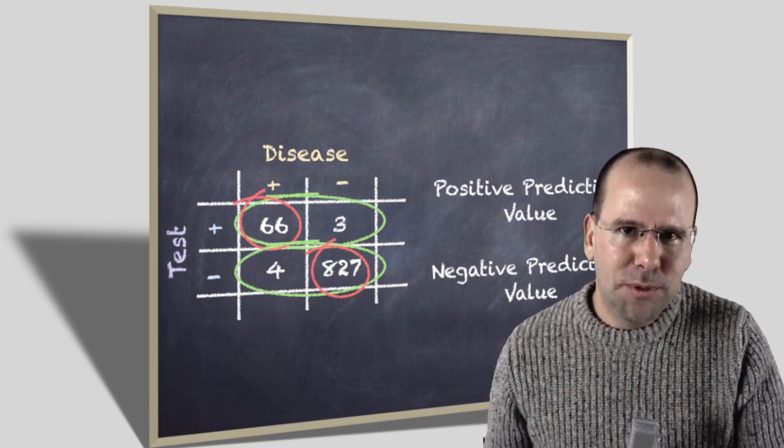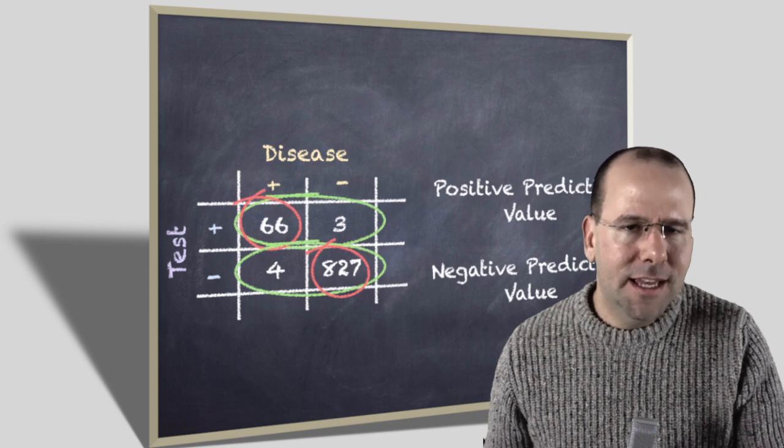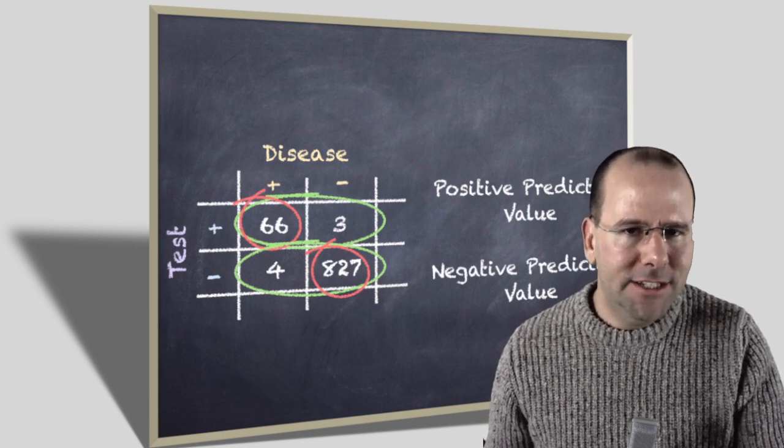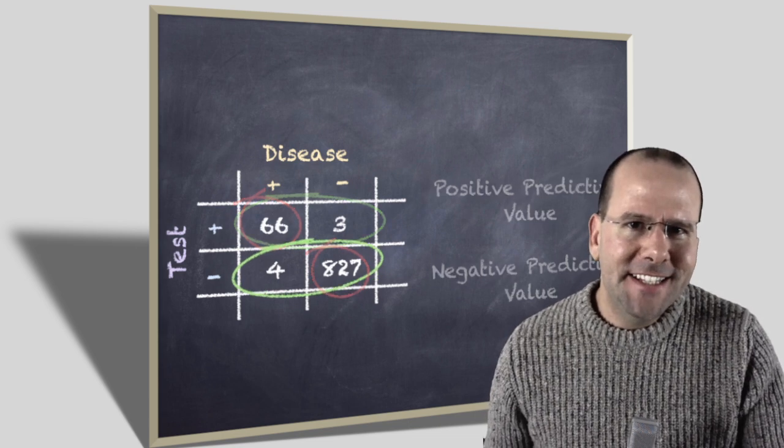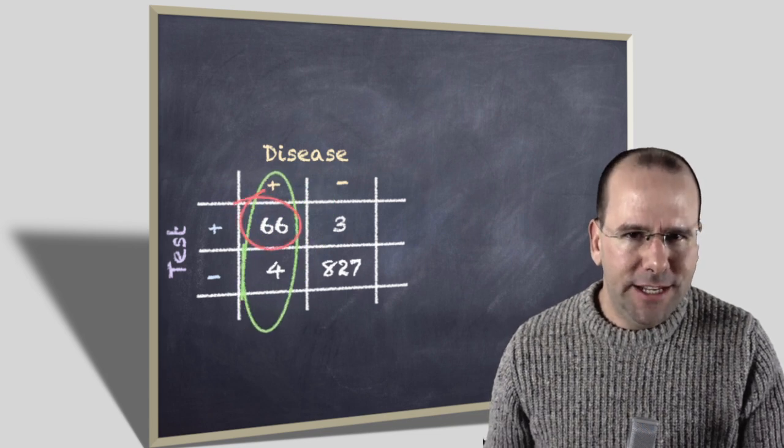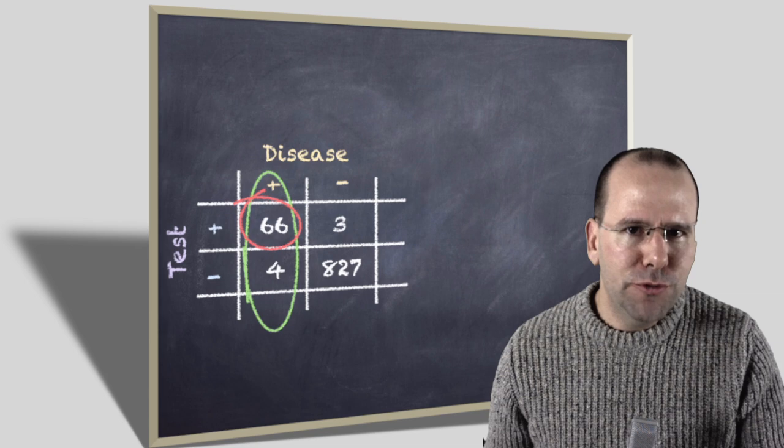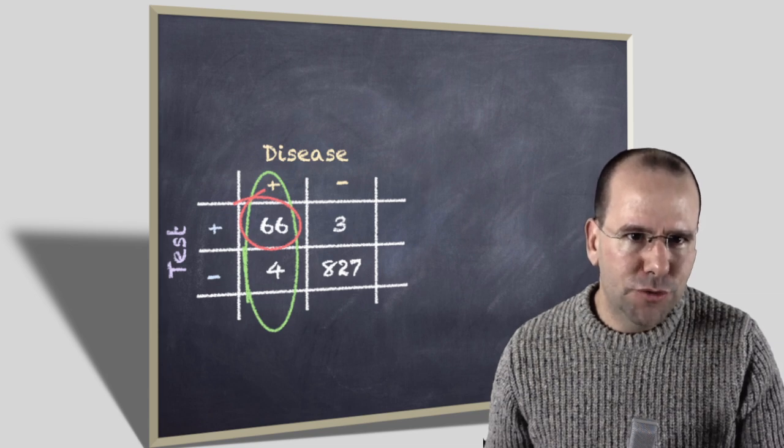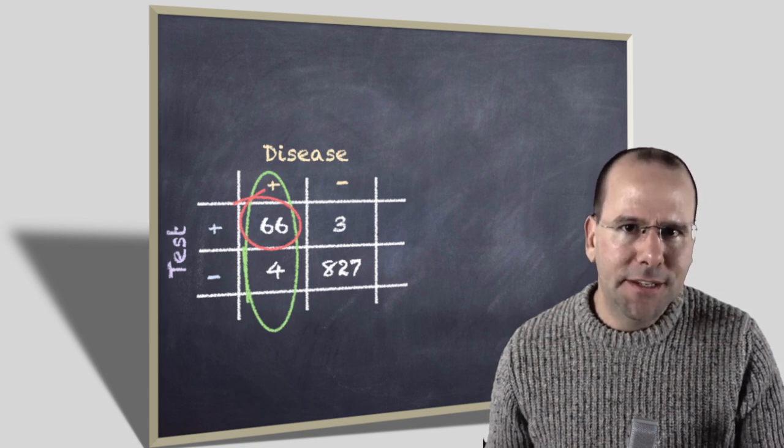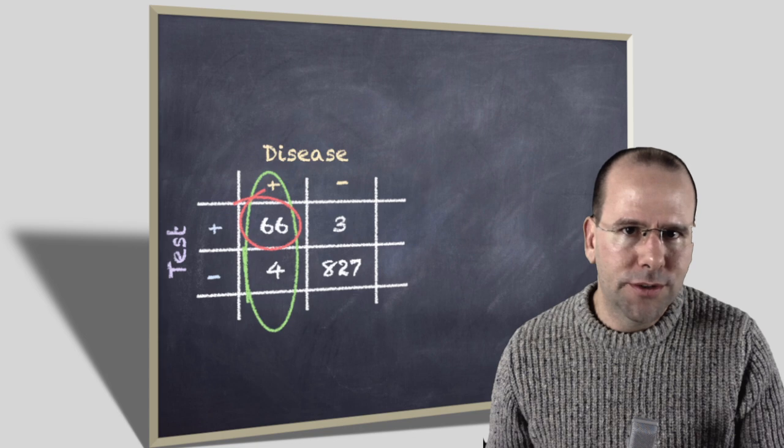Now there's an important difference between sensitivity and specificity and positive and negative predictive values. And I need to explain this to you. When we look at the sensitivity test, for example, everybody in the green circle actually has the disease. And so the difference between the numerator and the denominator, the numerator being the 66 people and the denominator being the 66 plus 4, so the 70 people.